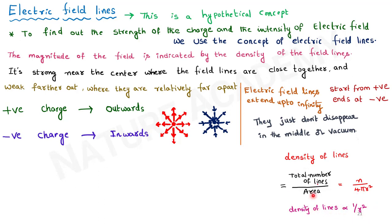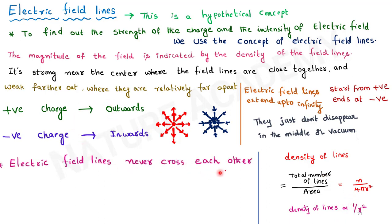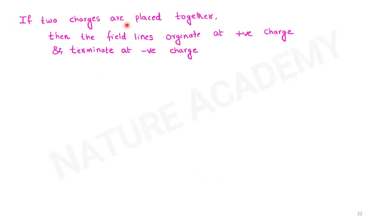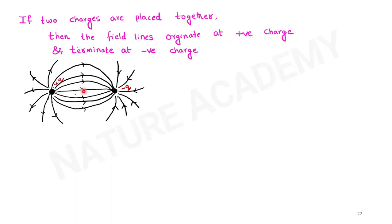Electric field lines never cross each other — if they did, the field would show two directions at the intersection point, which is physically unacceptable. Field lines are also open curves. If a positive and negative charge are placed together, field lines originate at the positive charge and terminate at the negative charge. For two positive charges, the field lines repel each other and never cross. For combinations like +q, –q, –q, +q, field lines emerge from positive charges and converge at negative charges.